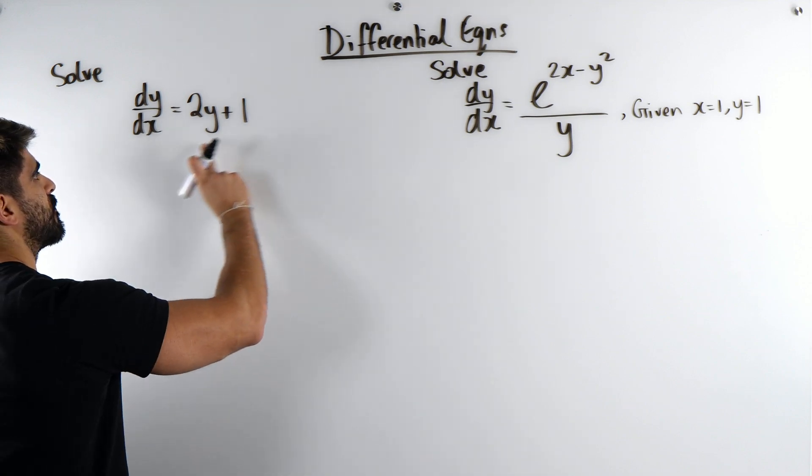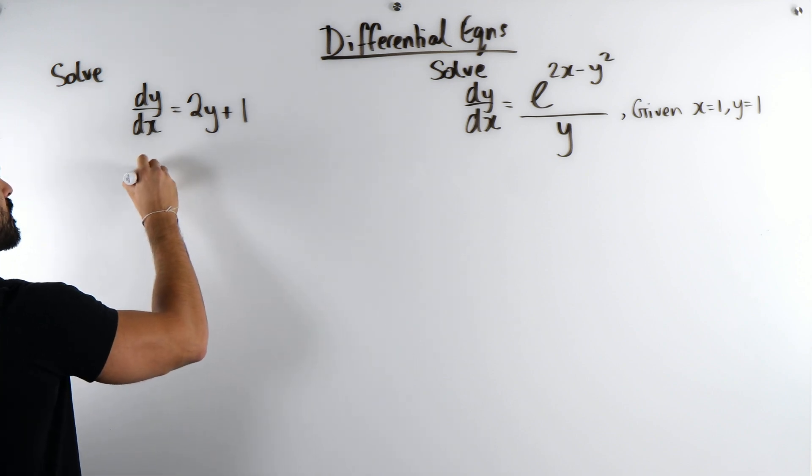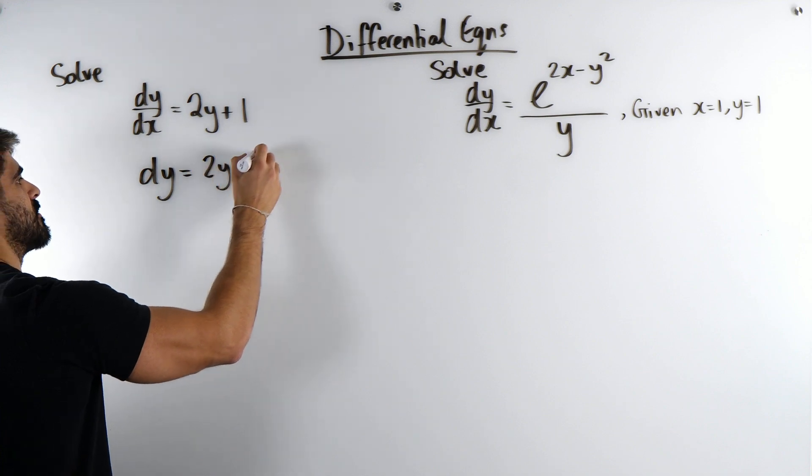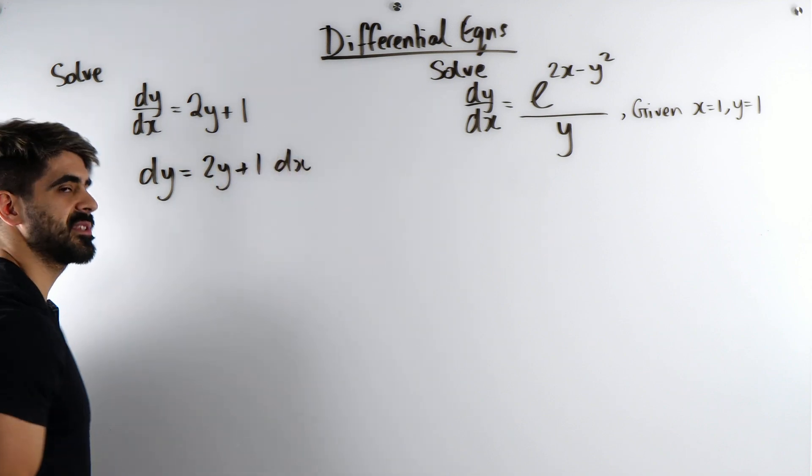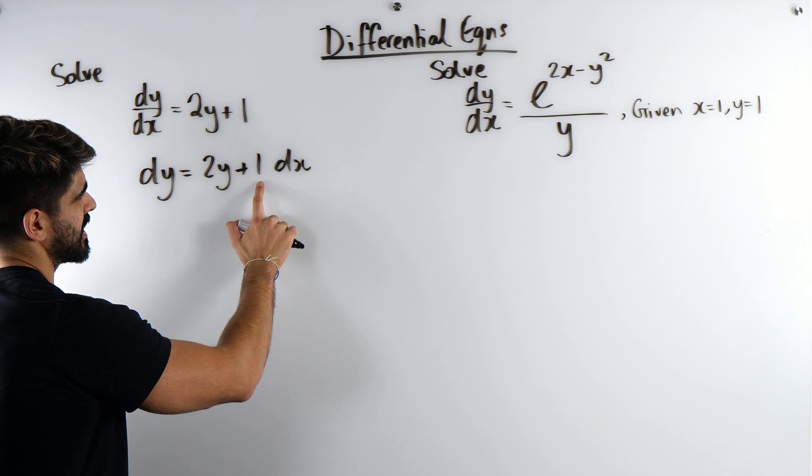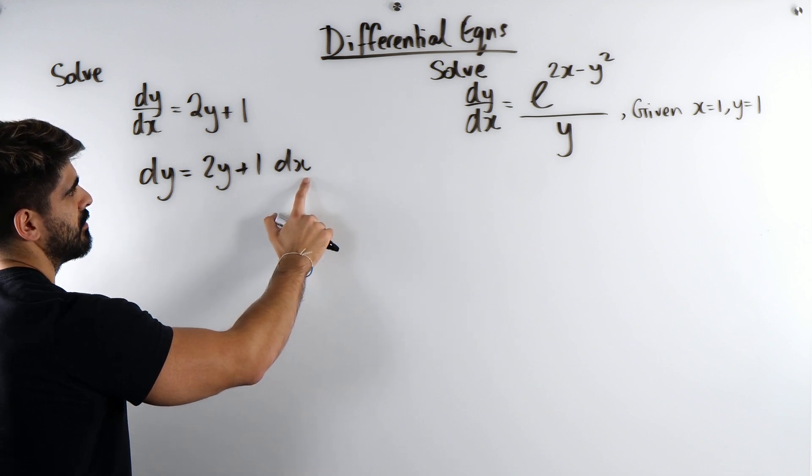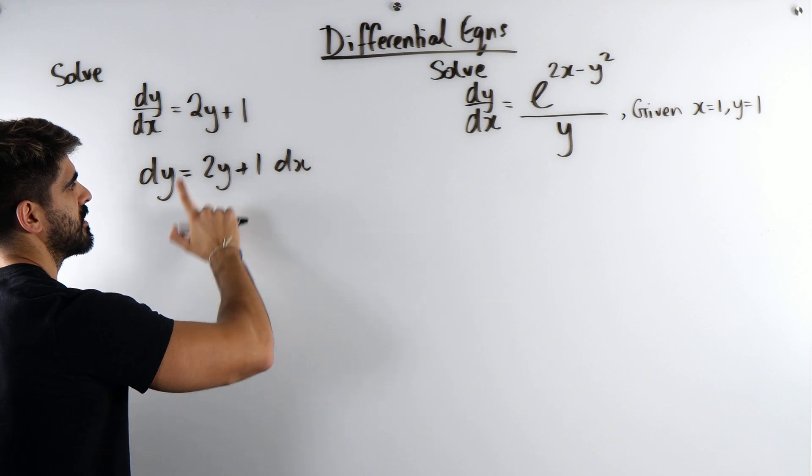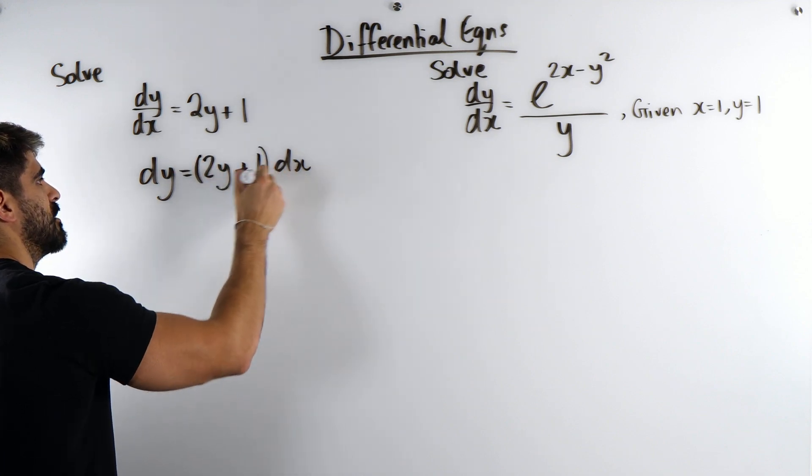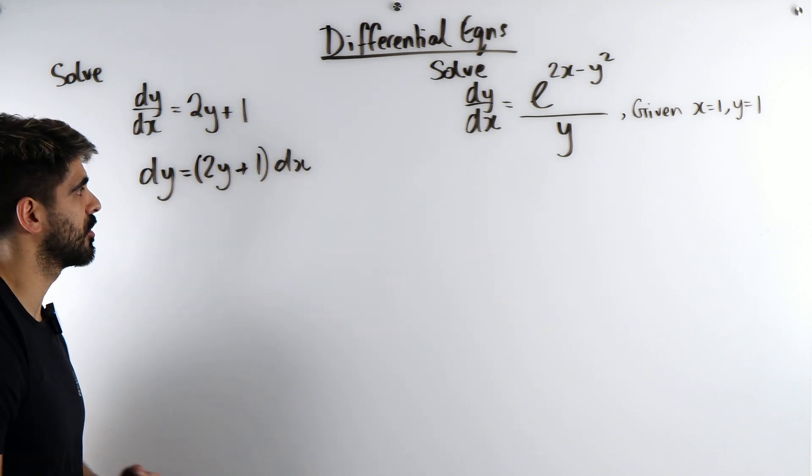First, multiply through by dx. Now if you multiply through by dx, you would get this. Well, that's technically not right because this technically says 1dx. But when you multiply through by dx, you're multiplying this whole side by dx. You need a bracket here to protect the whole thing.